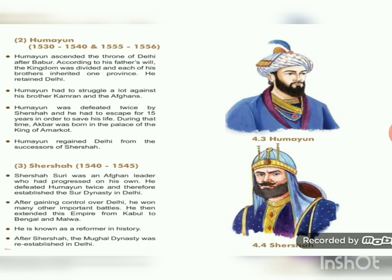Now we are going to learn about Humayun. Children, in 5th standard we have already learned about Babar, Humayun, Akbar, etc. Humayun ruled from 1530 to 1540 and 1555 to 1556. Humayun ascended the throne of Delhi after Babar. According to his father's will, the kingdom was divided and each of his brothers inherited one province; he retained Delhi. Humayun had to struggle a lot against his brother Kamran and the Afghans. Humayun was defeated twice by Sher Shah and had to escape for 15 years to save his life. During that time, Akbar was born in the palace of the King of Amarkot. Humayun regained Delhi from the successor of Sher Shah.